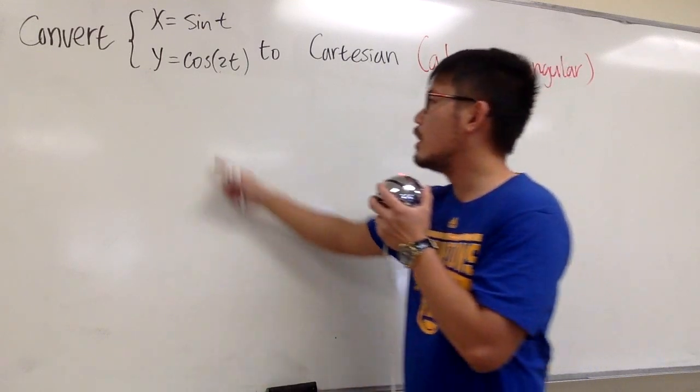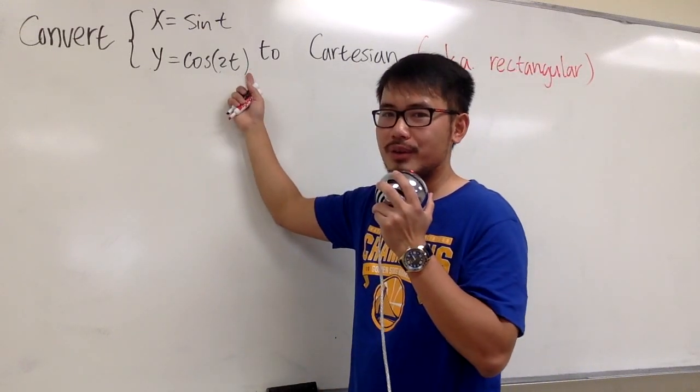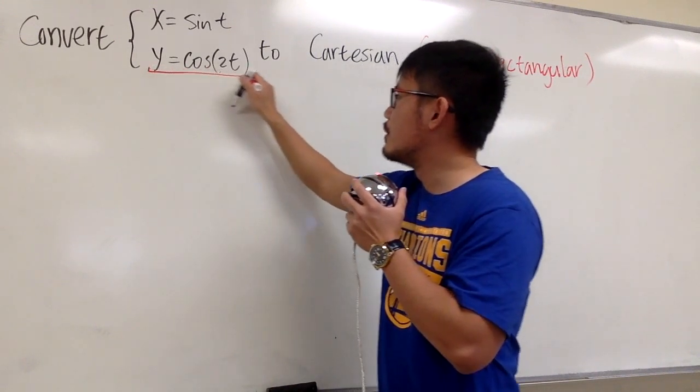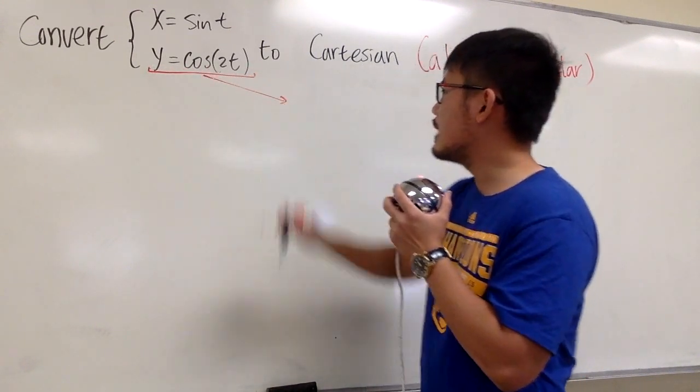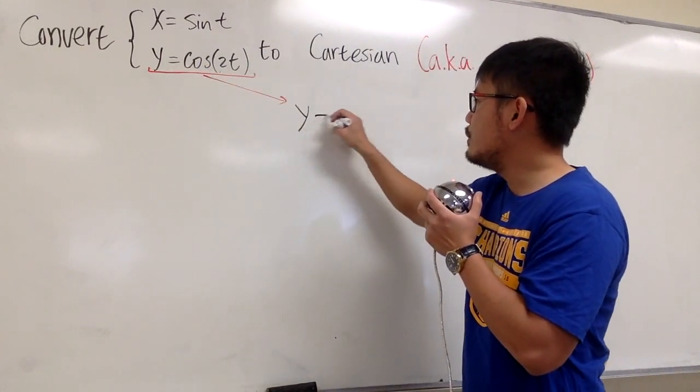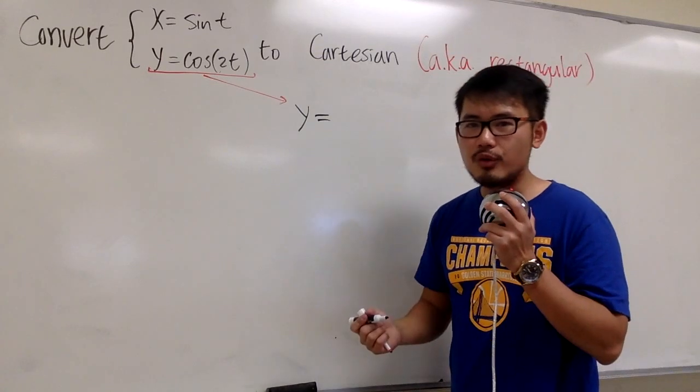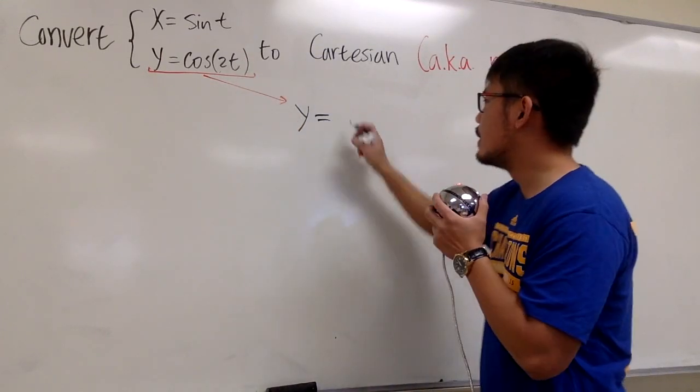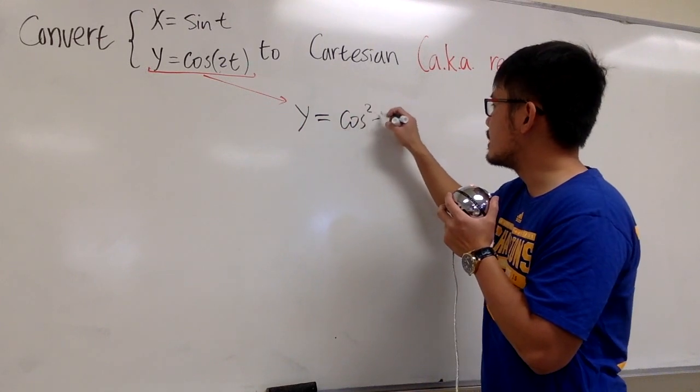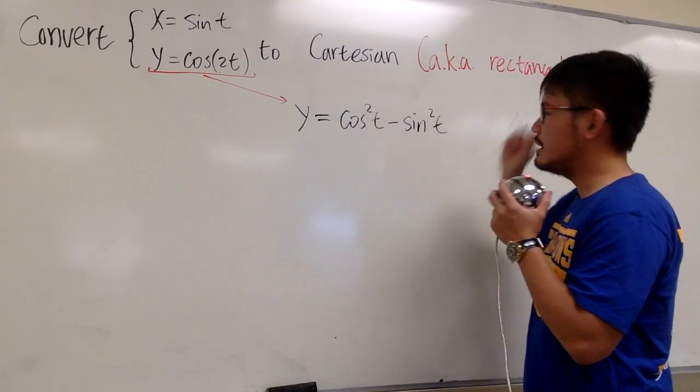But the good thing is that we do have a double angle formula for cosine. So instead of looking at y equals cosine of 2t, let me write this down right here for you. We will be looking at this equation as y equals, by the double angle formula for cosine, cosine of 2t is the same as cosine squared t minus sine squared t.